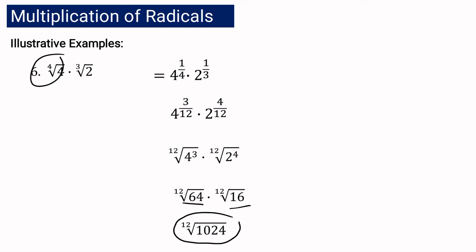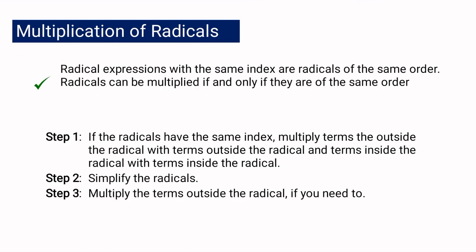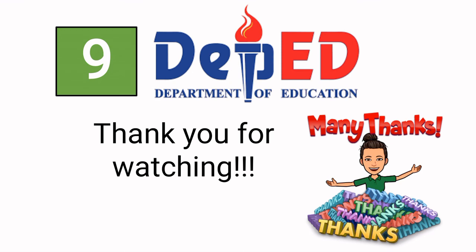So again, in multiplication of radicals, you have to make sure that the radicals are of the same order — meaning the indices of the radicals are the same. You multiply coefficient to coefficient and radicand to radicand. After multiplying, make sure all radicals are in simplest form, then multiply outside the radical if necessary. That is how we multiply radical expressions. That's it for today. Thank you for watching.